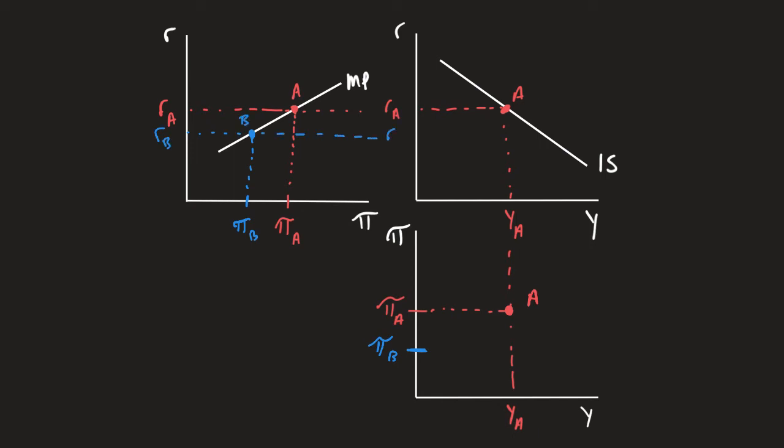So this lower level of real interest will then move along the IS curve, creating a higher level of output. So again, we have a higher level of output associated with this lower level of inflation. So we get point B.